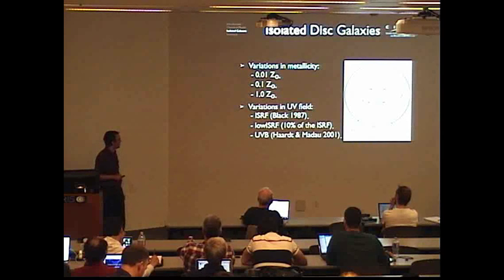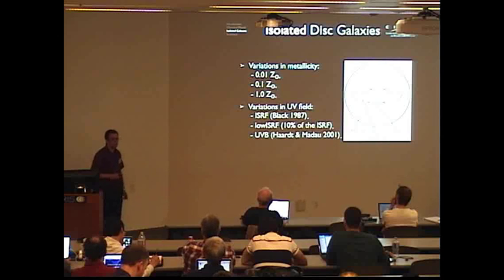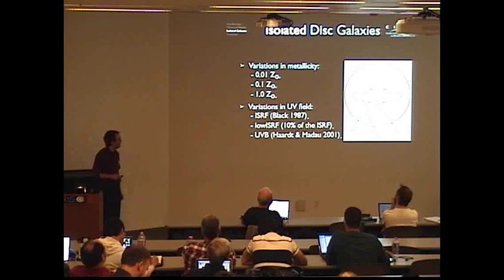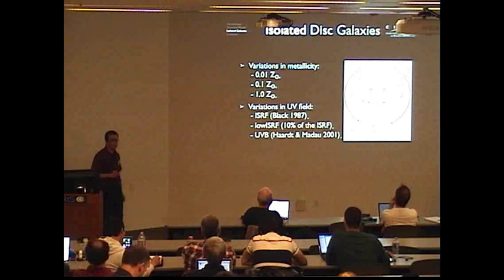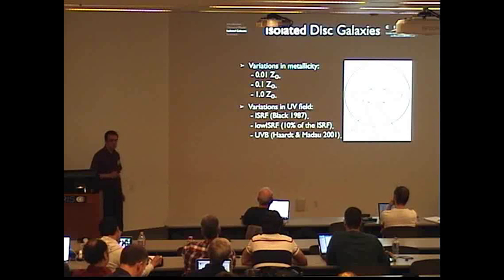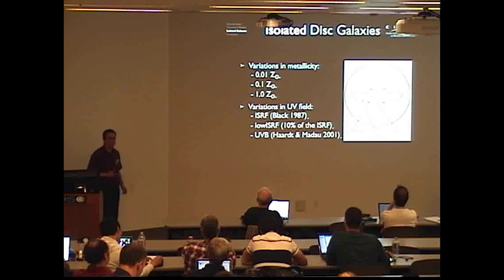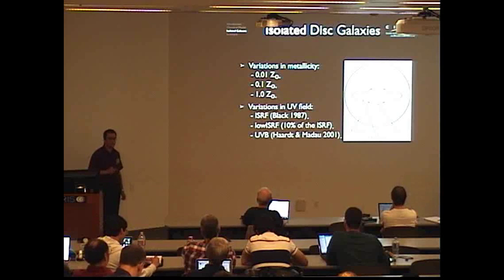We reduce this by a factor of 10, and we also consider the redshift-zero extragalactic UV background from Haardt & Madau 2001, which is about another factor of 10 lower. For all of these we run them twice: first with the full non-equilibrium chemistry model, and then with cooling rates tabulated in chemical equilibrium. By comparing the two we can see what effect the non-equilibrium chemistry has on galaxy evolution.